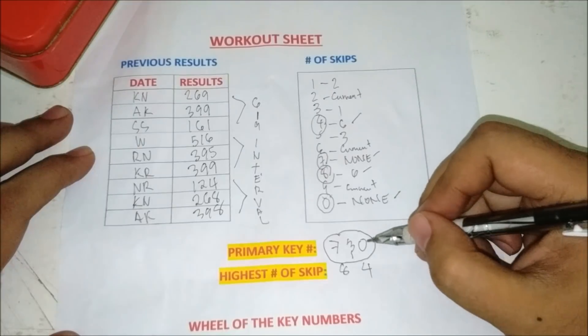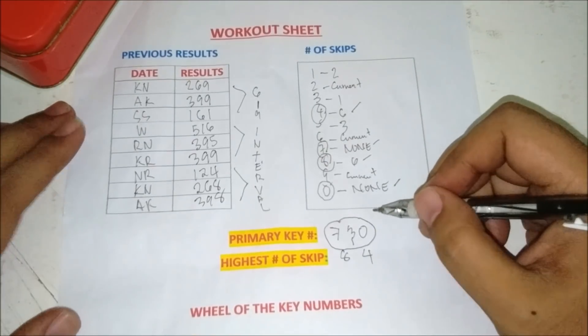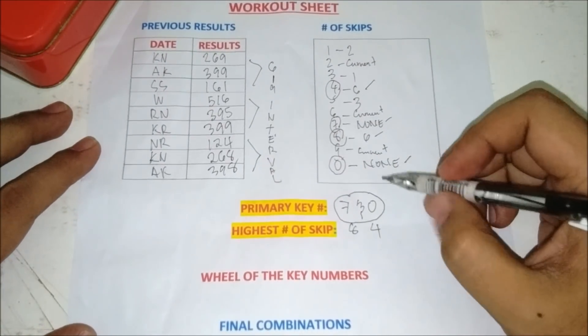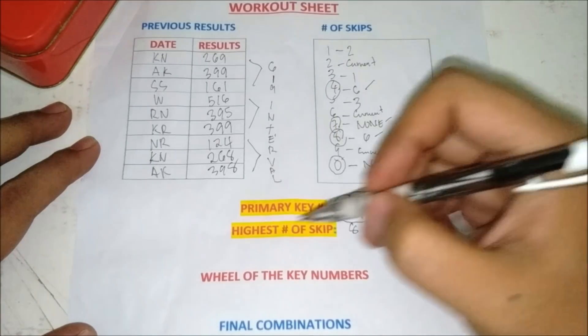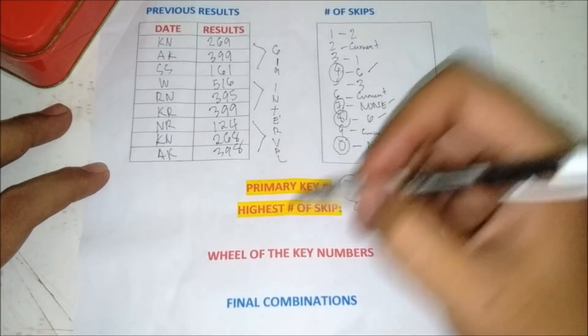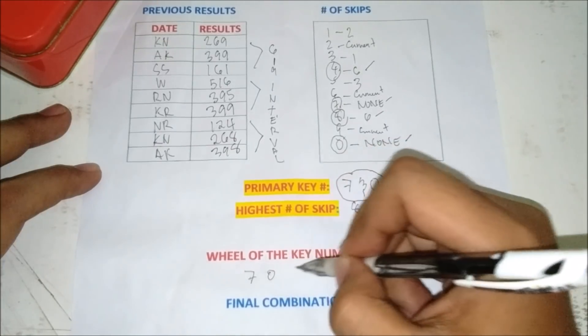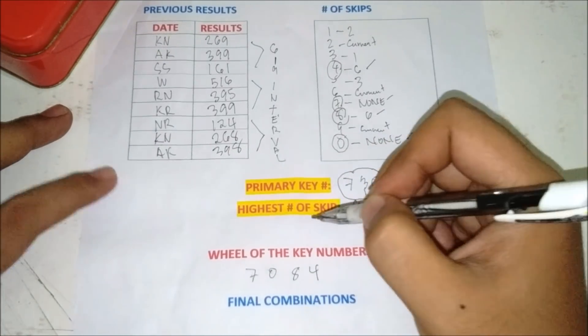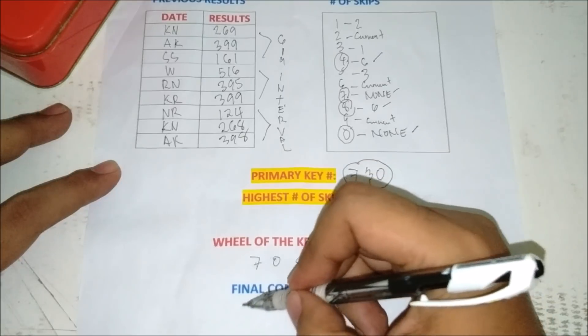So we will pair seven and zero to eight and four. We will wheel this key number to get our combinations. So we will wheel these four key numbers. These are the combinations.